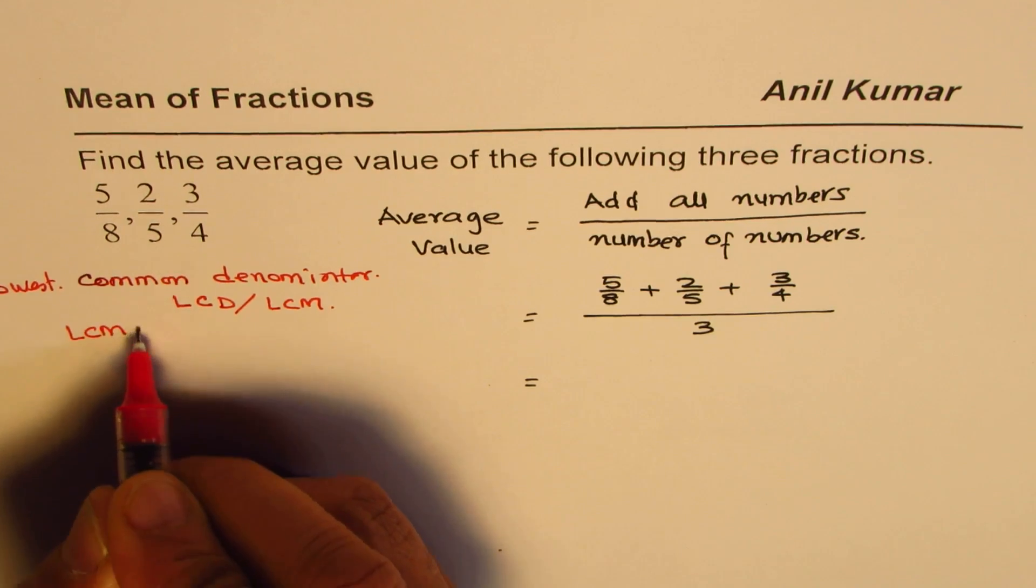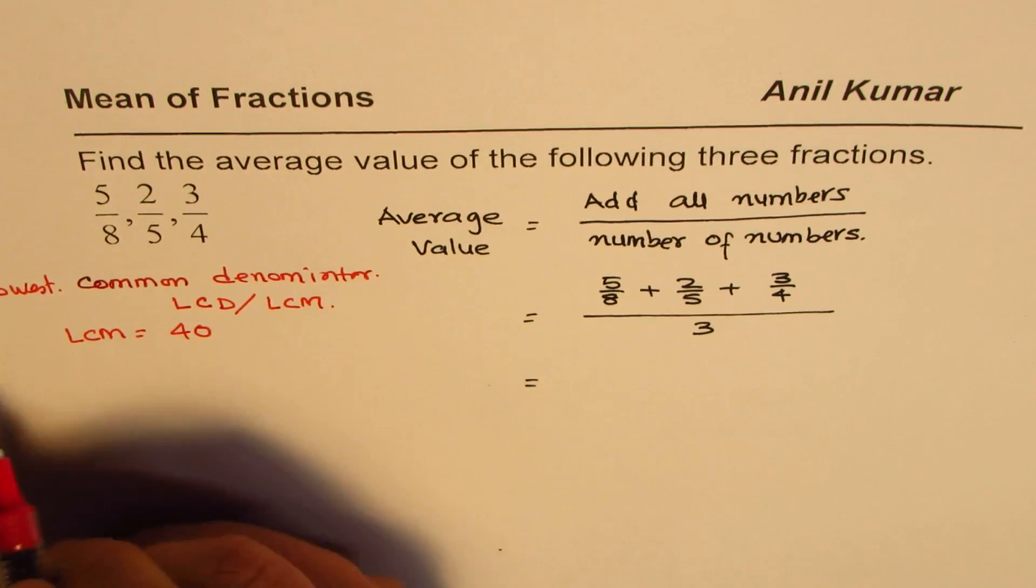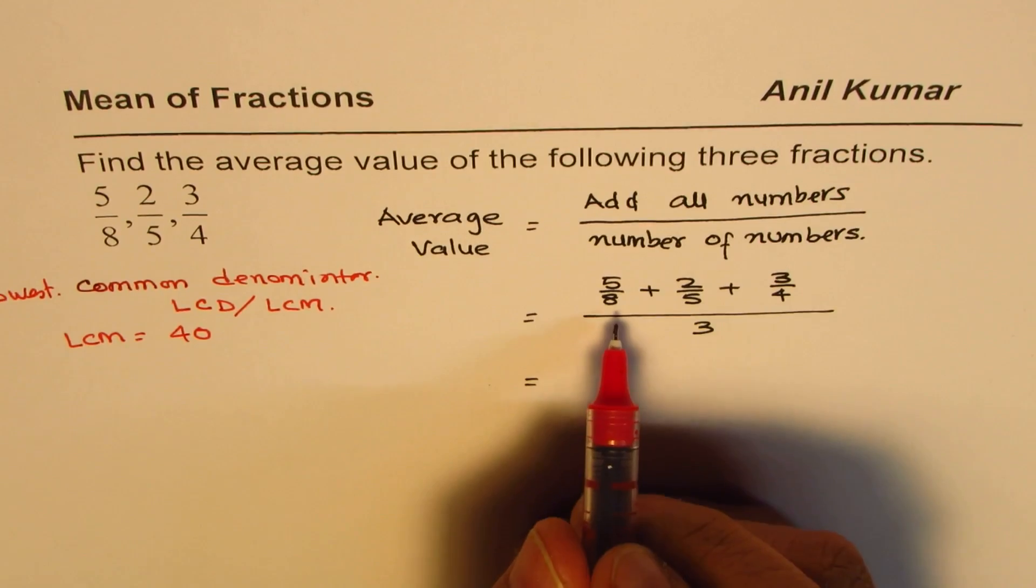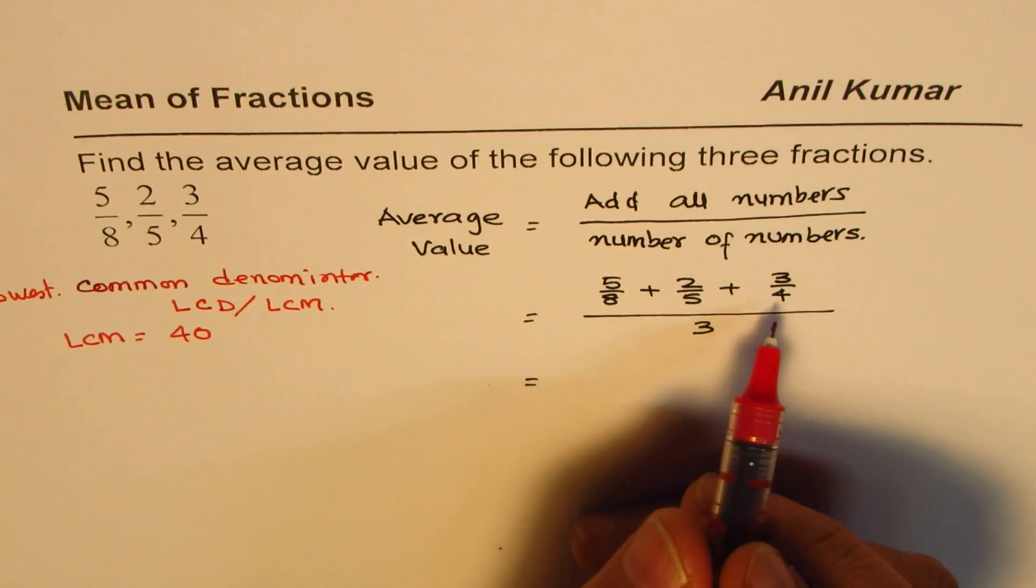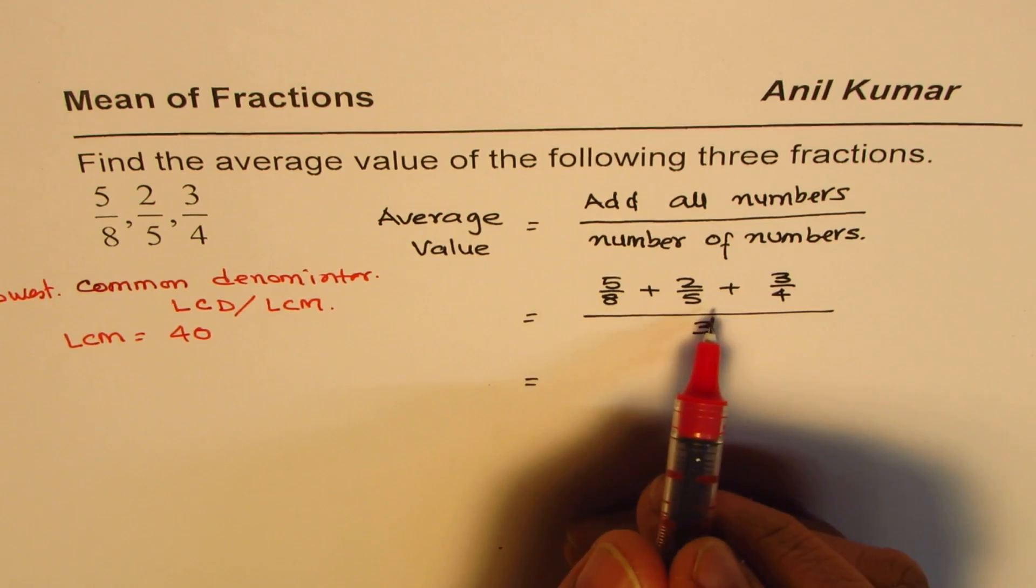Between 8, 5, and 4, what is the LCM? LCM is 40, right? So 8 times 5 is 40, 4 goes 2 times in 8, so everything works.